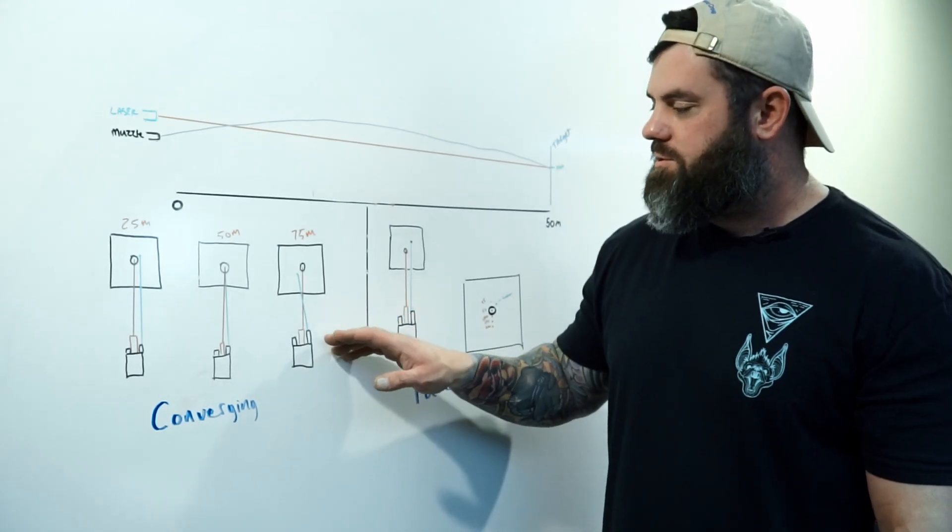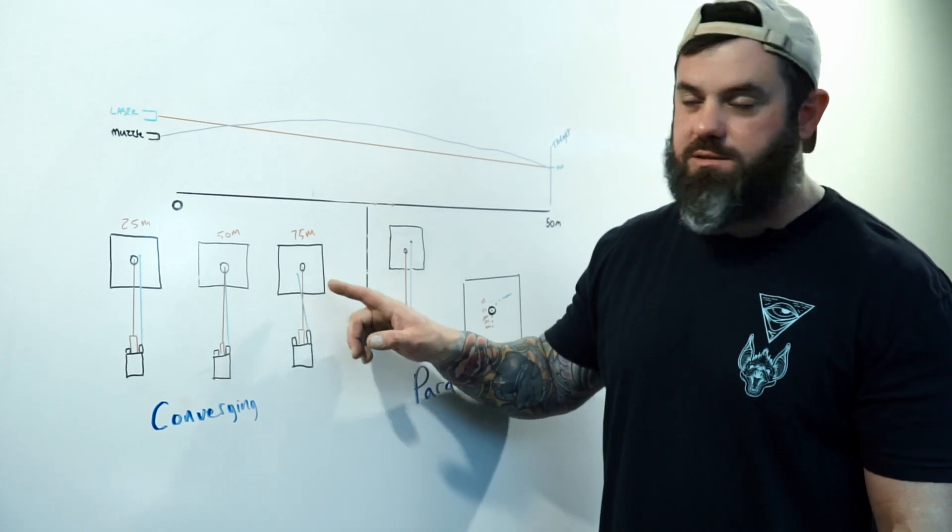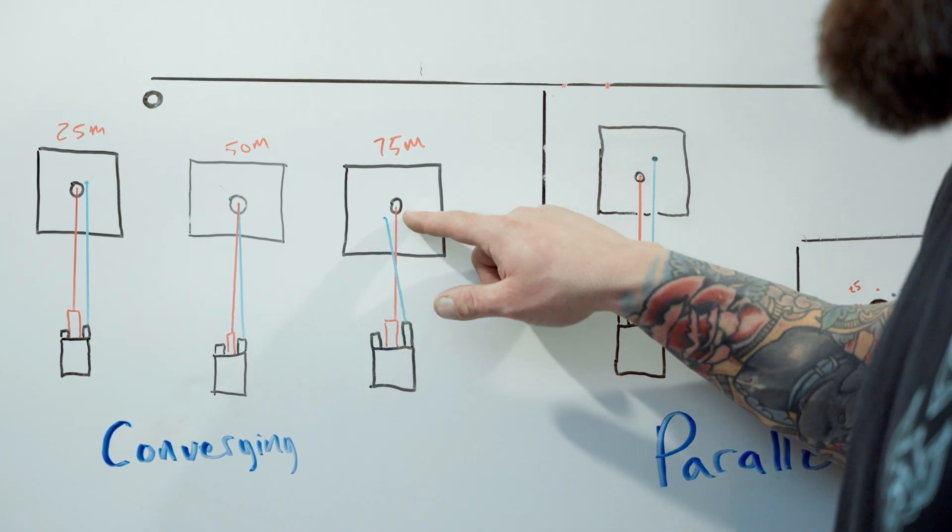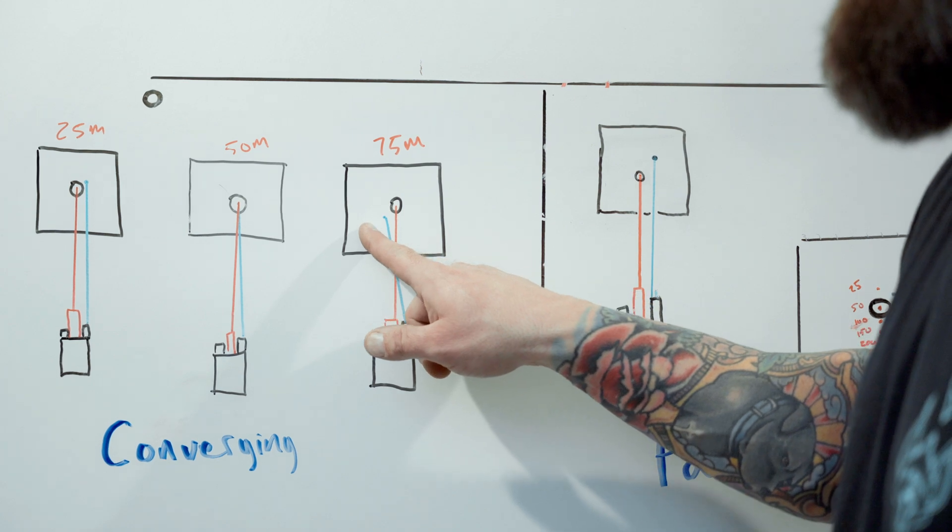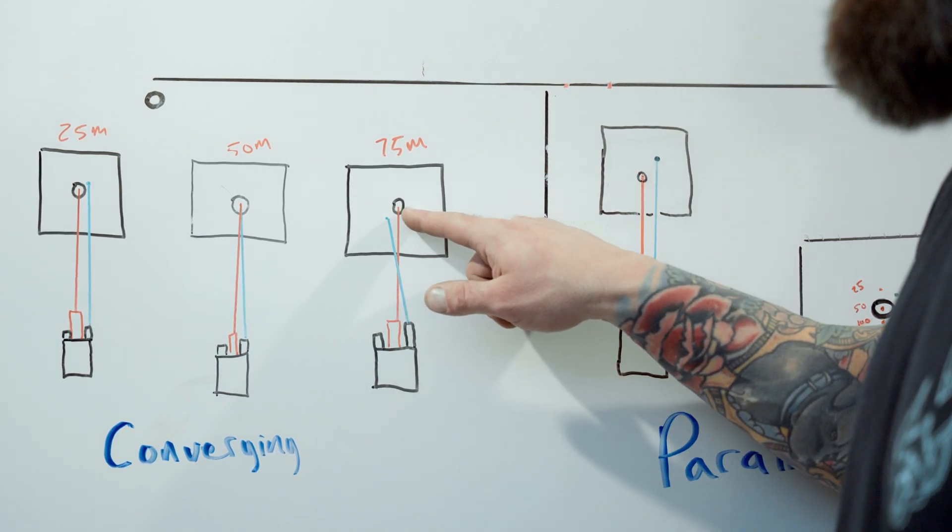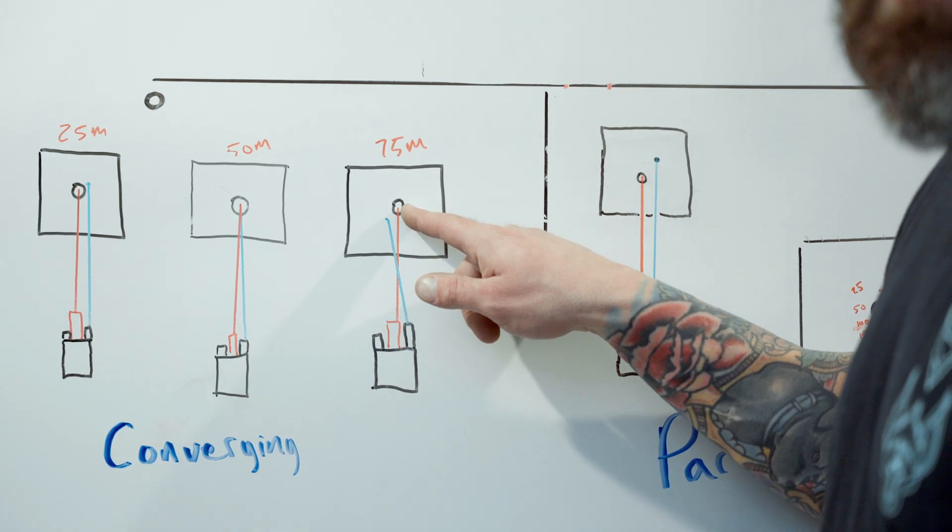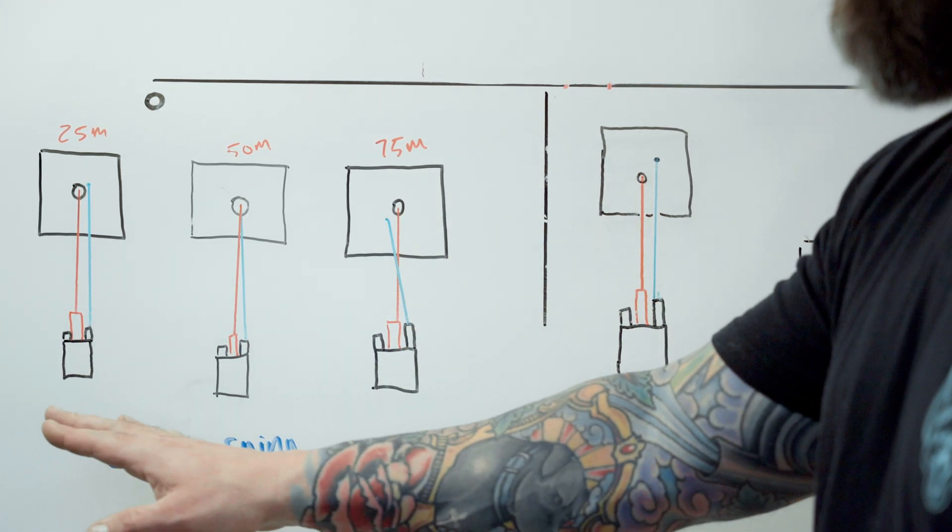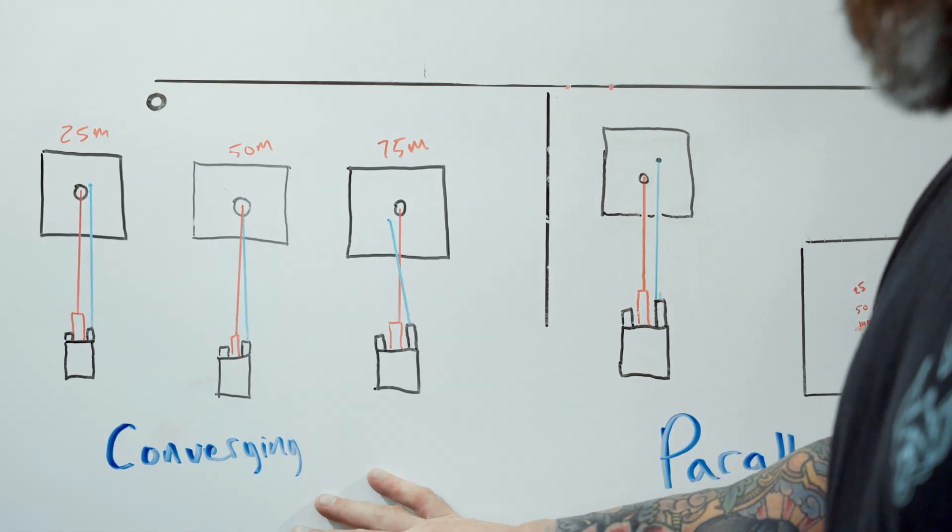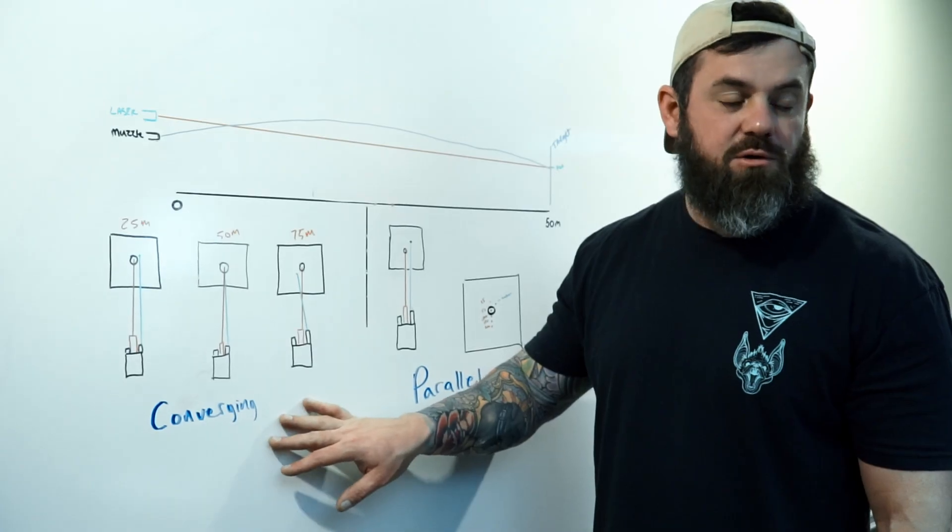At 75 meters, the laser is going to pass the point of convergence, cross over the point of aim and land somewhere low left on the target, while still maintaining point of aim, point of impact with your projectile. So this kind of gives you an example of the shortcomings of this aiming solution or this zeroing solution.